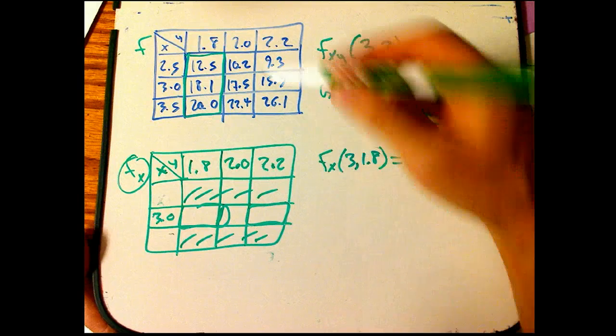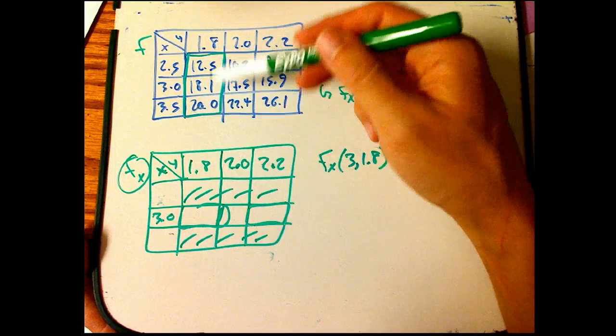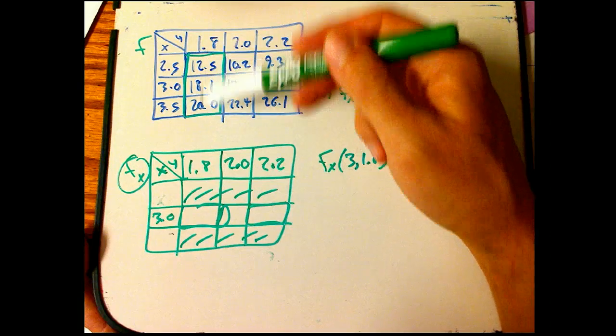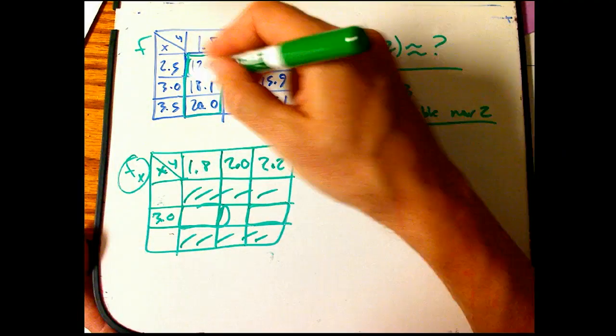Now, since it's an x derivative, I hold the y variable constant at 1.8. And I'm going to want to look at how that varies as I go through 3 in the x variable. Once again, though, I'm going to bracket it. I'm not even going to look at this guy. I'm going to bracket it with these two values.